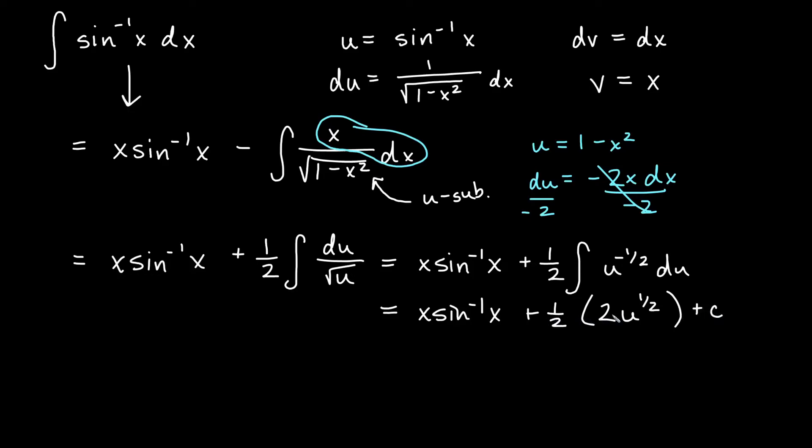You'll notice that the two and the one half will reduce to one. So in this instance, when I reduce those, I'll also go back and replace my u. So I'll have u to the one half. And remember, u to the one half will be the square root of u.